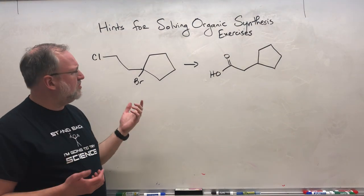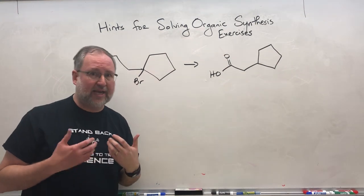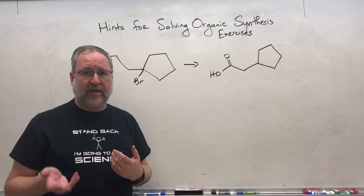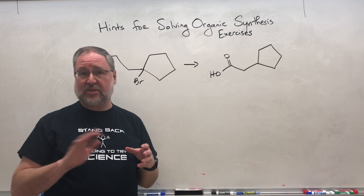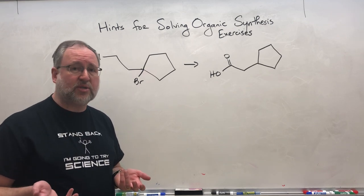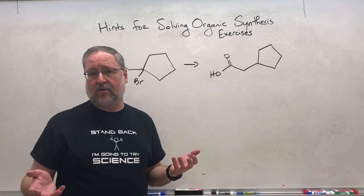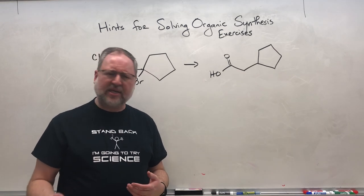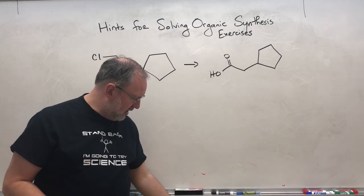In that same vein, if you have a particular group that you don't want to react with something, think about that idea of protecting groups. If you have, for example, an alcohol group that you don't want to be messed with, sometimes you can use a redox reaction to oxidize that alcohol group to turn it into something else that then won't react. So think about this idea of protecting groups.